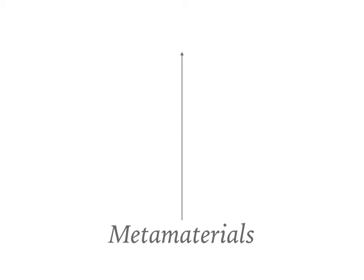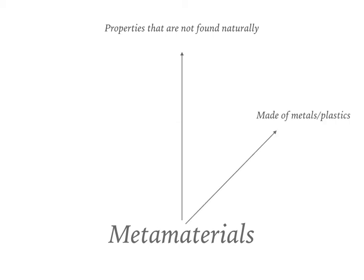A metamaterial is a material engineered to have a property that is not naturally found in nature. They are made from assemblies of multiple elements made out of materials such as metals or plastics. The scales at which these materials operate are usually smaller than the wavelengths of the electromagnetic waves that they are meant to influence. Their structure, shape, and geometry are responsible for influencing these EM waves, which results in the material getting some smart properties.